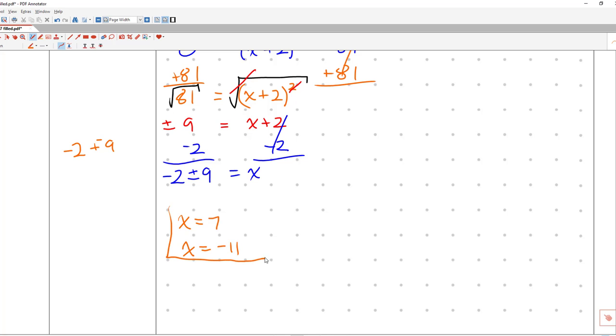So those are the two final answers. And again, you'd list the negative 11 first on Khan Academy because that's the smallest or most negative number. And we're done. That concludes Algebra 1, Notes 10-7. I'll see you guys tomorrow.